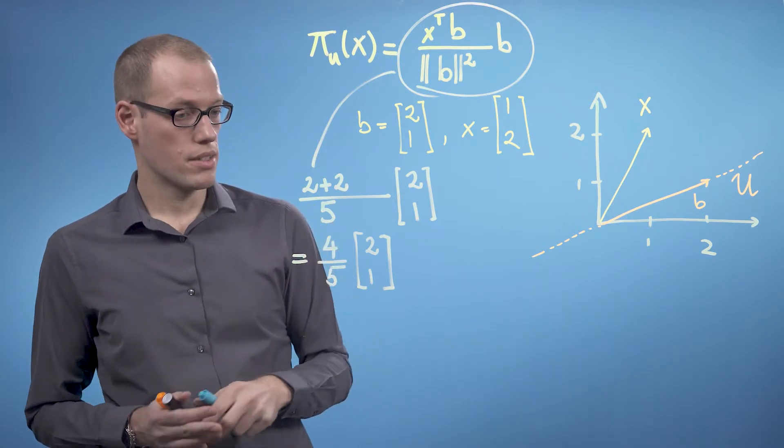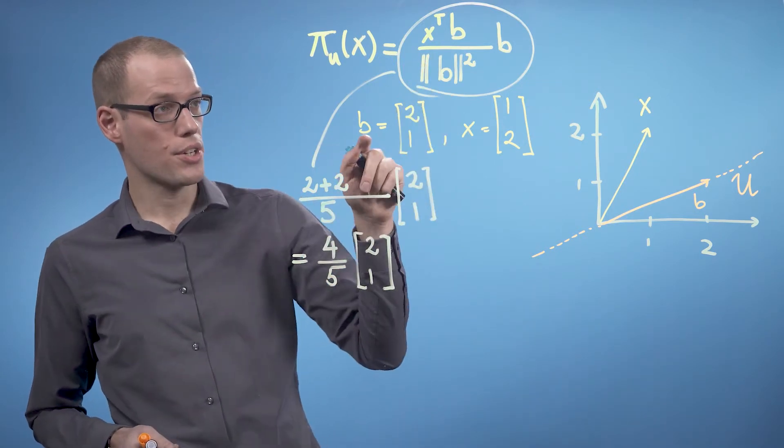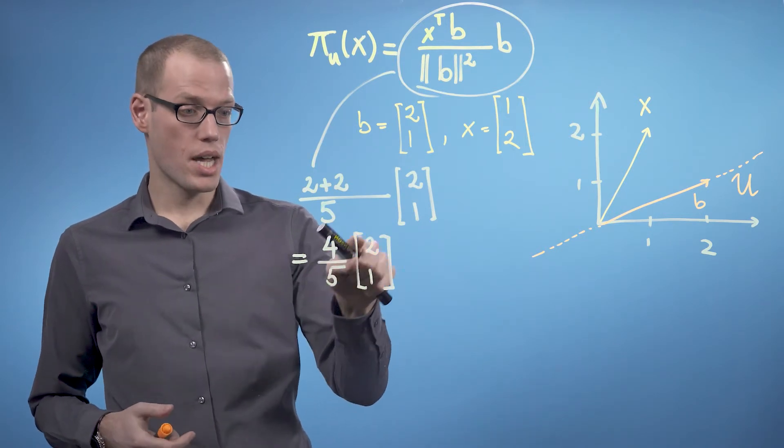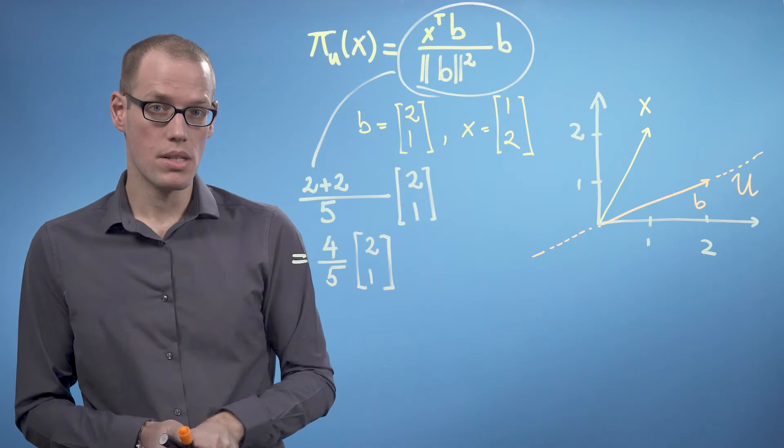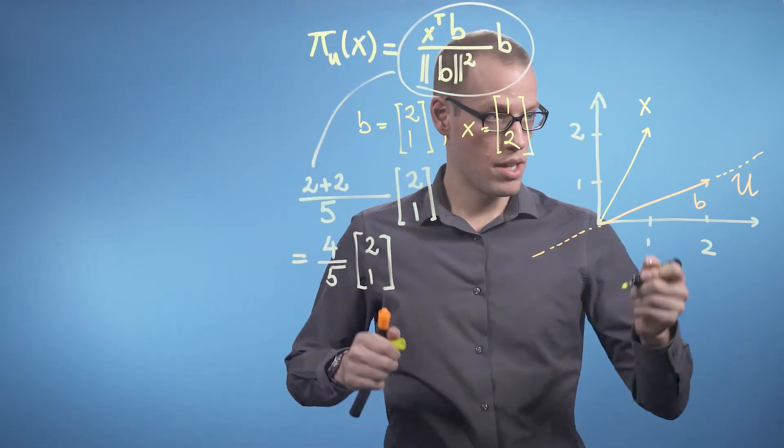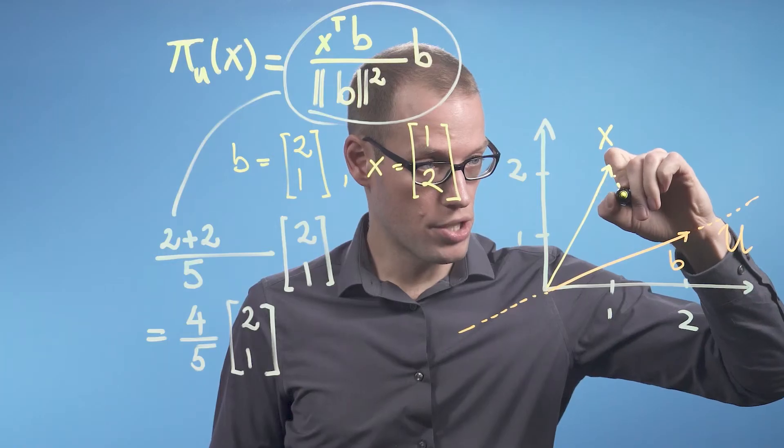This means that our orthogonal projection is 4 over 5 times the vector b. That means if we take 4 fifths of this vector, then we will get to our orthogonal projection.